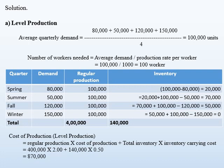We prepare a table as shown. For spring, demand is 80,000 but we produce 100,000, resulting in inventory of 20,000 units. For summer, demand is 50,000; with production of 100,000 plus inventory of 20,000, we have 120,000 on hand, leaving an inventory of 70,000 units. For fall, demand is 120,000 and production is 100,000 plus inventory of 70,000, leaving an inventory of 50,000 units. In the last quarter, winter, demand is 150,000; production of 100,000 plus inventory of 50,000 means the whole amount is consumed and no inventory is left.